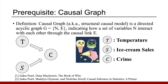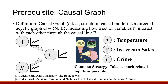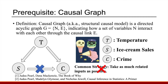Here is an example: to predict the crime rate, if we take all related inputs — ice cream sales and temperature — the model could take a shortcut from S to C, which doesn't make sense. This happens because in summer, temperature increases, which causes both ice cream sales and the crime rate to increase. With the help of a causal graph, we know how to design the correct model and cut the biased shortcut.